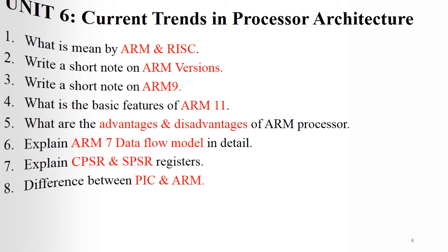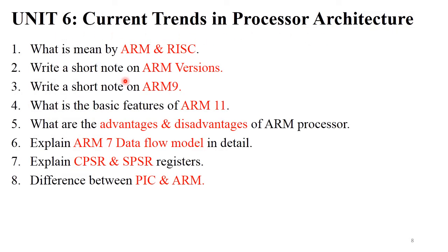Unit 6 is Current Trends in Processor Architecture. 'What is meant by ARM or RISC architecture?' — explain what an ARM processor is and what RISC architecture is, generally for 4 to 6 marks. 'Write short notes on ARM versions and ARM9' — understand the different versions of ARM processors and the features of ARM9 and ARM11, and mention those features in detail, generally for 4 to 6 marks. 'What are the advantages and disadvantages of ARM processor?' — mention any 4 to 6 advantages and disadvantages, generally for 4 marks.